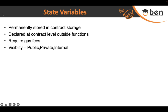If you declare a variable as internal, then only the contract's own functions or any child contracts deriving from that contract can access it. If you make it private, it's only accessible by the functions inside that particular contract — not even child contracts. So private removes the scope from child contracts entirely.